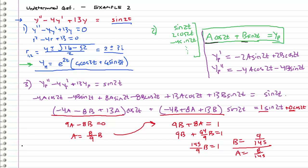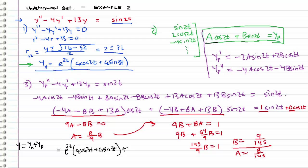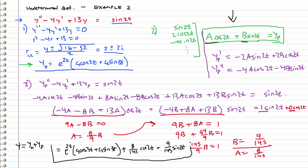We have officially determined our undetermined coefficients and can now assemble the entire general solution. y equals the homogeneous plus the particular: e to the 4t times (c1 cosine 3t plus c2 sine 3t), plus 8 over 145 cosine 2t, plus 9 over 145 sine 2t. This is our general solution to this non-homogeneous differential equation. Thanks for watching — next time we'll look at yet another example using the method of undetermined coefficients.